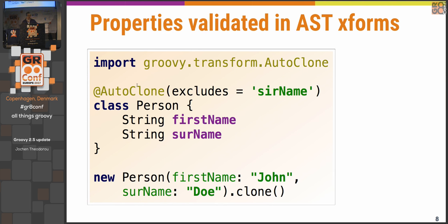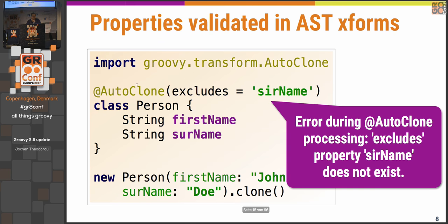We also have an annotation called @AutoClone. You can include or exclude fields and properties if you want to. What's new is that these excludes are now checked by the compiler. So if you accidentally type a property name that doesn't exist — for example you write 'surname' but that property doesn't exist — you now get a compile-time failure. That's new.